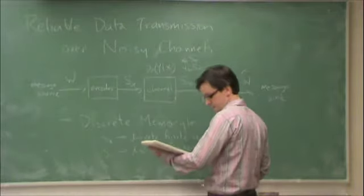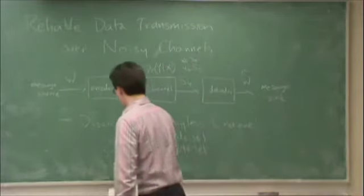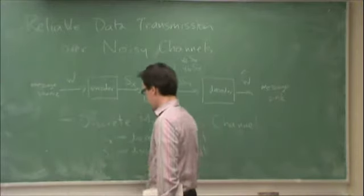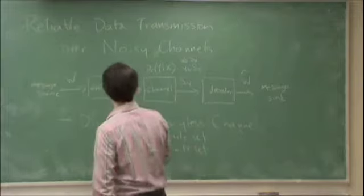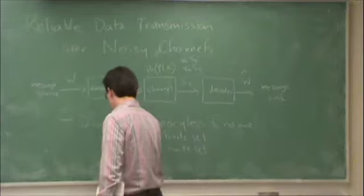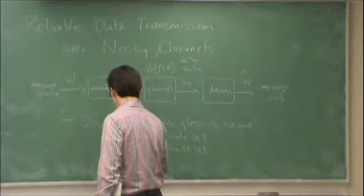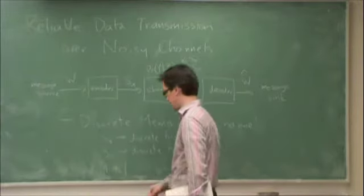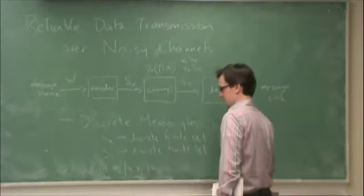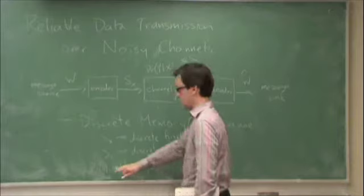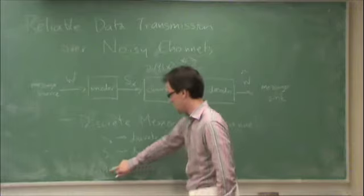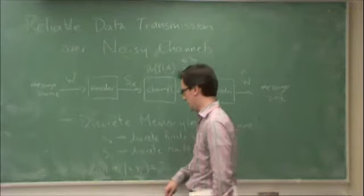Probability of two successive channel outputs, y1, y2, given two successive channel inputs, x1, x2, has to be equal to— in other words, these channel transitions, x1 to y1 and x2 to y2, have to be independent. So,